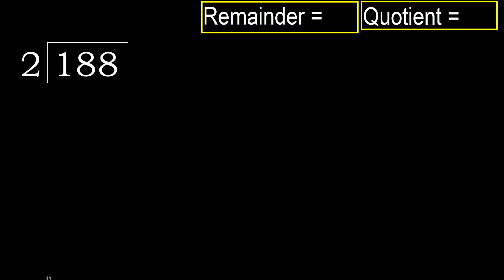188 divided by 2. 1 is less, therefore next. 18 is not less, therefore with 18.